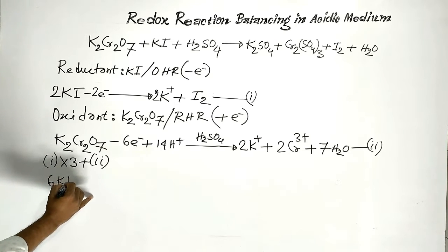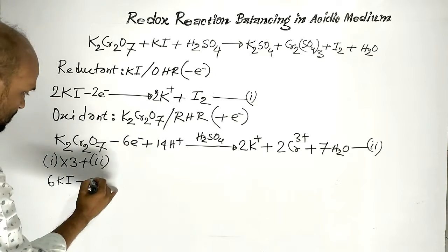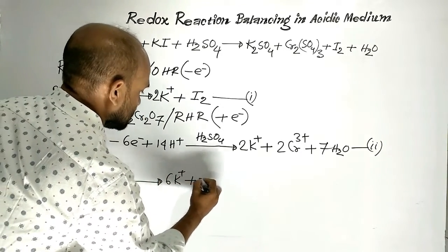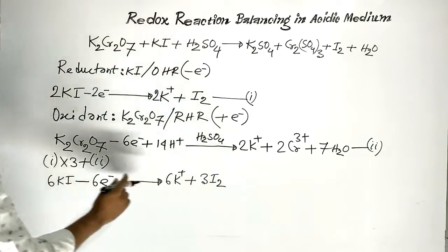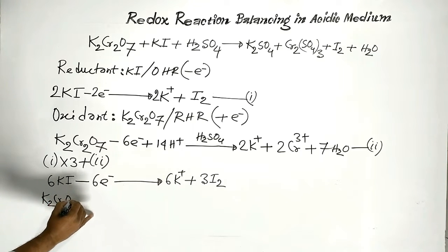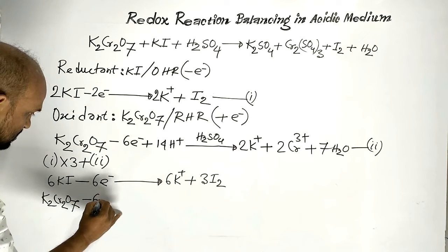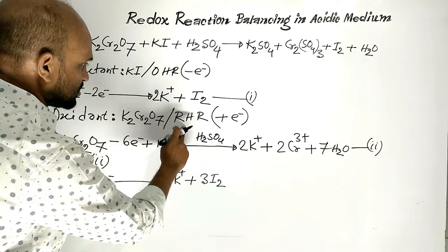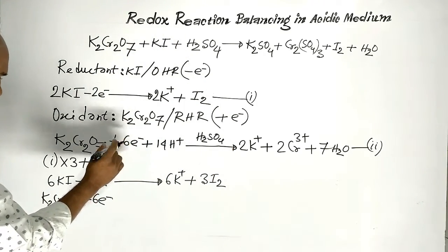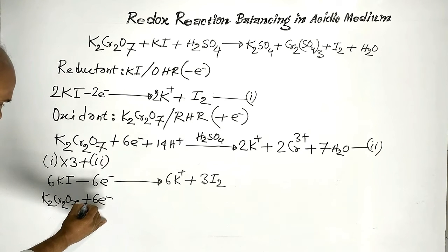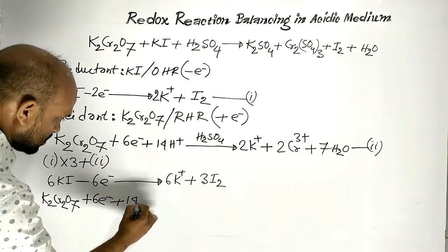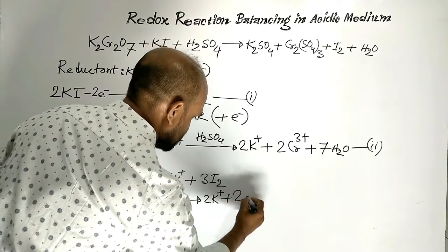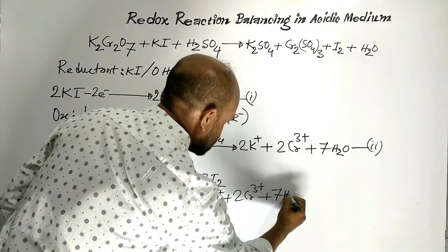Here, six potassium iodide release six electrons on the left side, giving six potassium plus ions and three iodine molecules. For equation two, potassium dichromate causes the reduction half-reaction through acceptance of electrons, so it will be plus six electrons, then plus 14 protons. On the right side we get two potassium plus ions, two chromium-3-plus ions, and seven molecules of water.